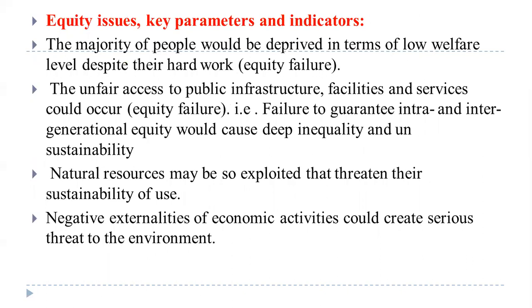Now, equity issues — equity is the third major issue. Key parameters and indicators are taken into consideration. The majority of people would be deprived in terms of low welfare level despite their hard work. Unfair access to public infrastructure, facilities and services could occur — that is called equity failure. Failure to guarantee intra- and intergenerational equity would cause deep inequality and unsustainability. Natural resources may be so exploited that there would be unsustainable use of those resources. Negative externalities of economic activities could create serious threats to the environment, so we must focus on minimizing such negative externalities.